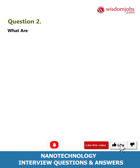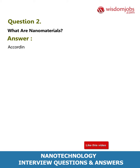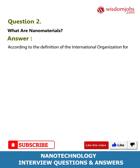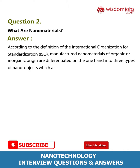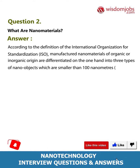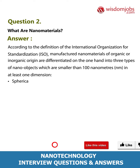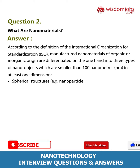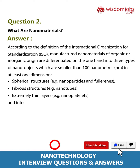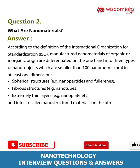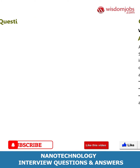Question 2: What are nanomaterials? According to the definition of the International Organization for Standardization (ISO), manufactured nanomaterials of organic or inorganic origin are differentiated on the one hand into three types of nano objects which are smaller than 100 nanometers (nm) in at least one dimension: spherical structures (e.g., nanoparticles and fullerenes), fiber structures (e.g., nanotubes), and extremely thin layers (e.g., nano platelets); and into so-called nanostructured materials on the other.